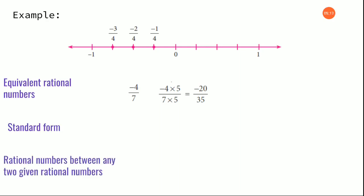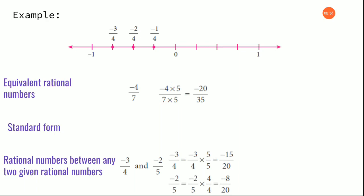The next topic is rational numbers between any two rational numbers. Suppose I am asking you to find the integers between 0 and 5, you can directly say 2, 3, 4. But if I give you a fraction like minus 3 by 4 and minus 2 by 5, which number comes in between? In order to find out, you are going to convert the denominators to be the same by taking out the LCM. So you multiply minus 3 by 4 into 5 by 5, and minus 2 by 5 into 4 by 4. The answer will be minus 15 by 20 and minus 8 by 20, and then you write the numbers between them.